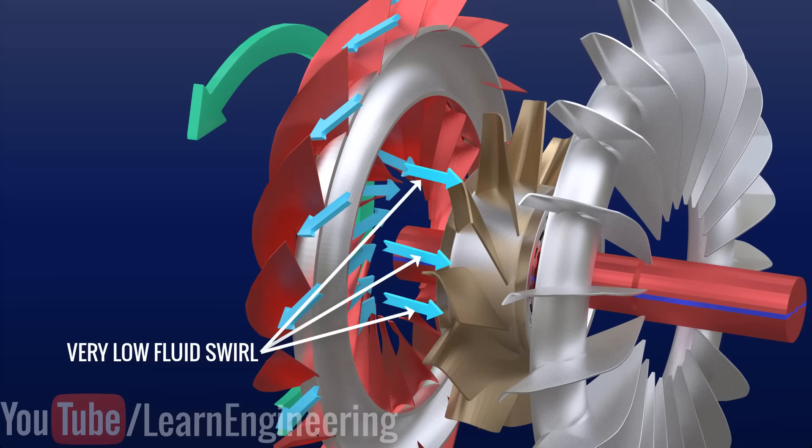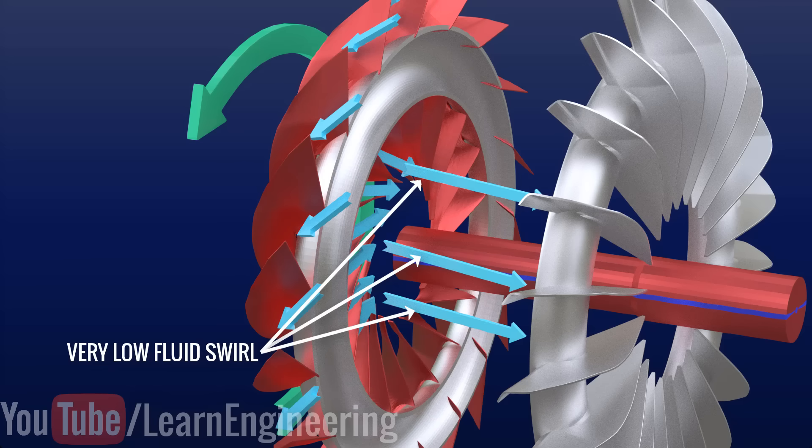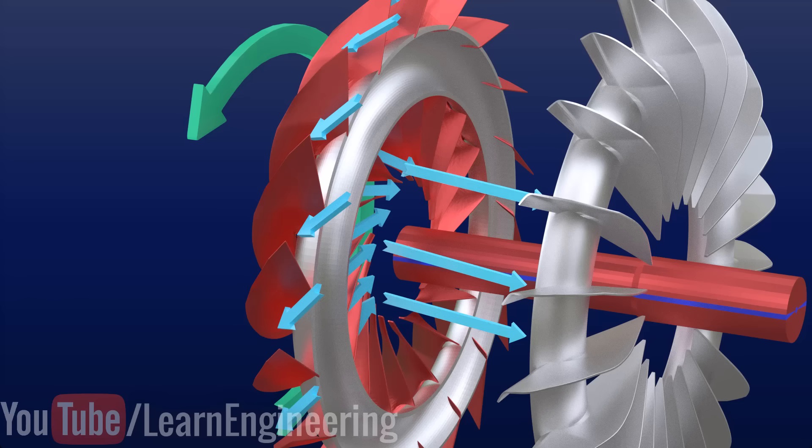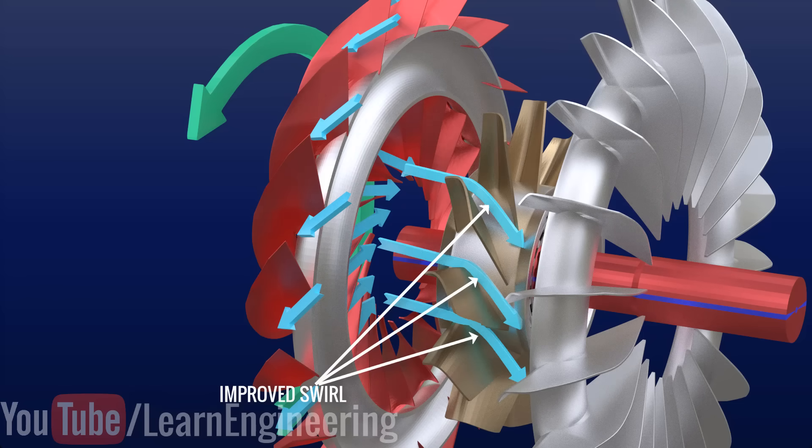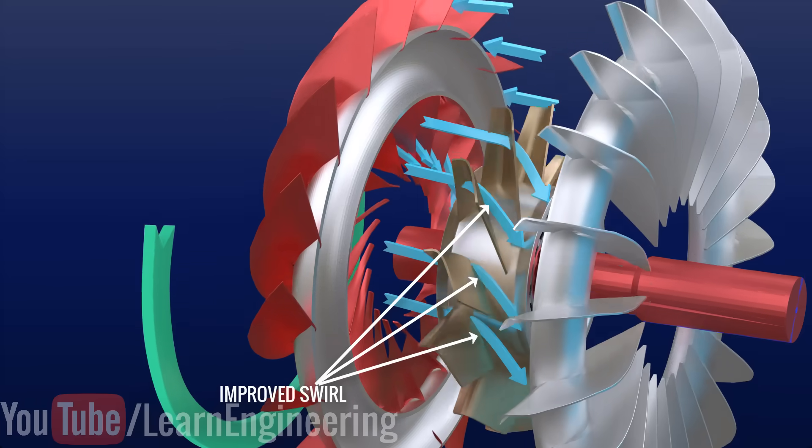If we do not use a reactor, this very low swirl will affect the performance of the pump and the whole torque converter very badly. With the introduction of reactor, the flow gets diverted again and the pump receives the fluid with improved swirl.